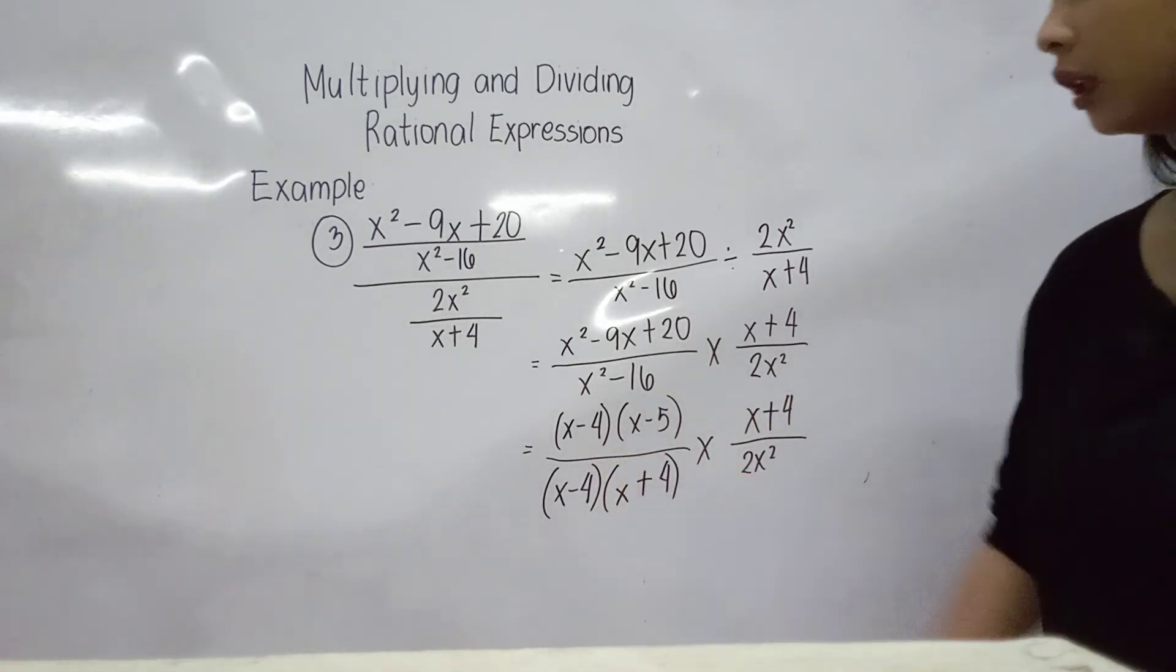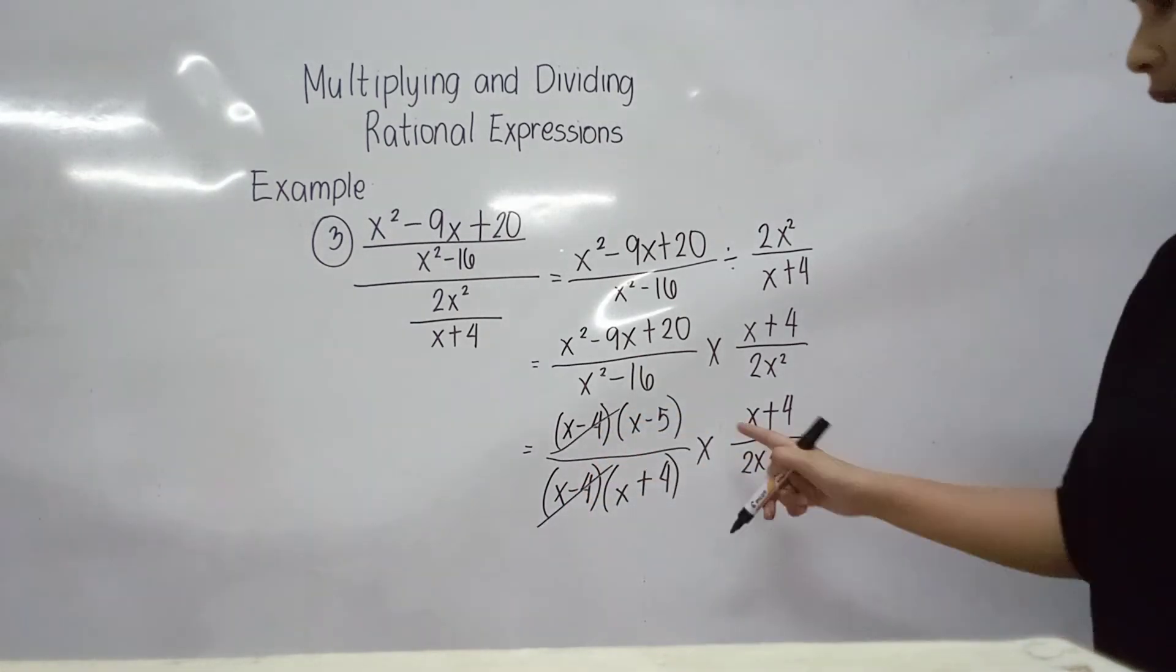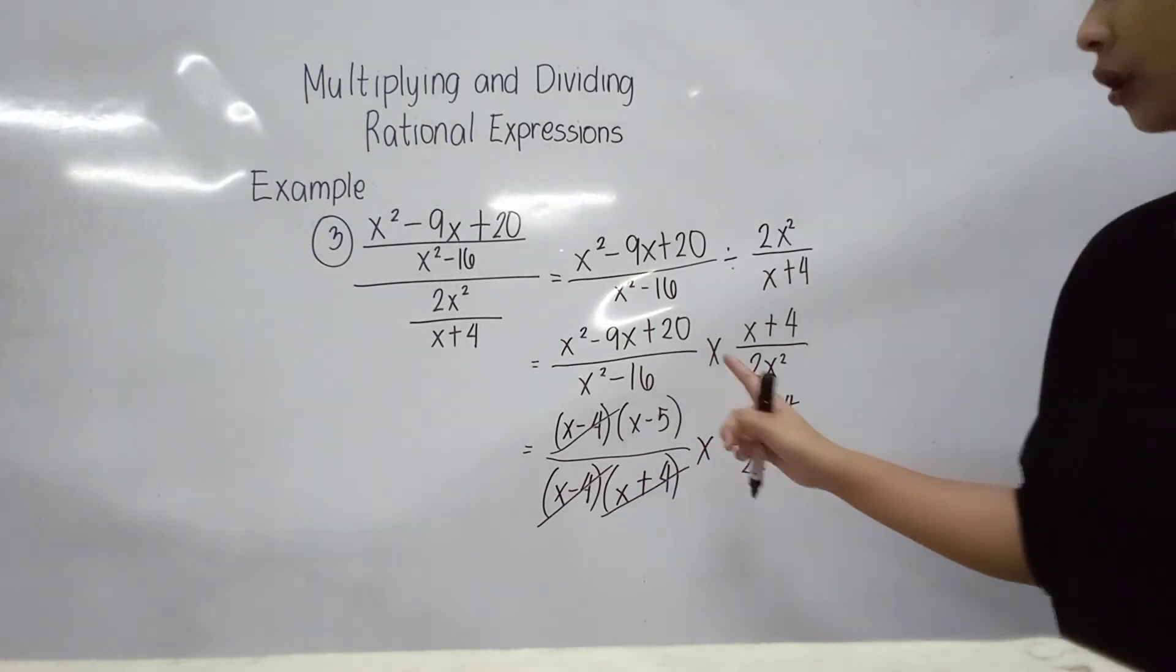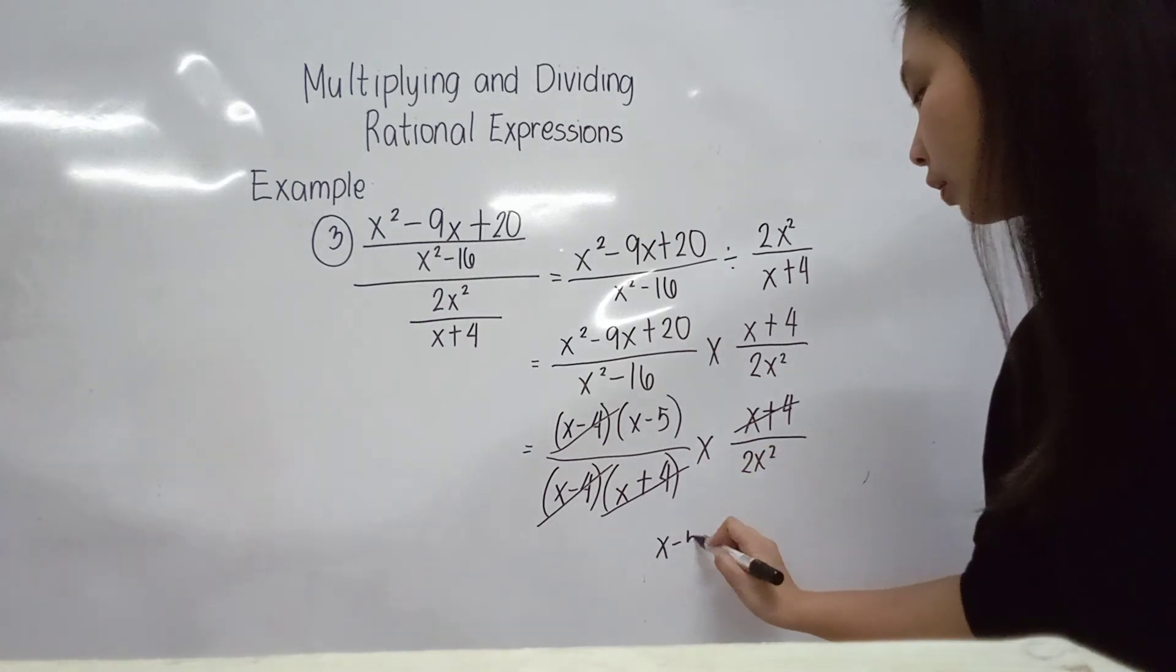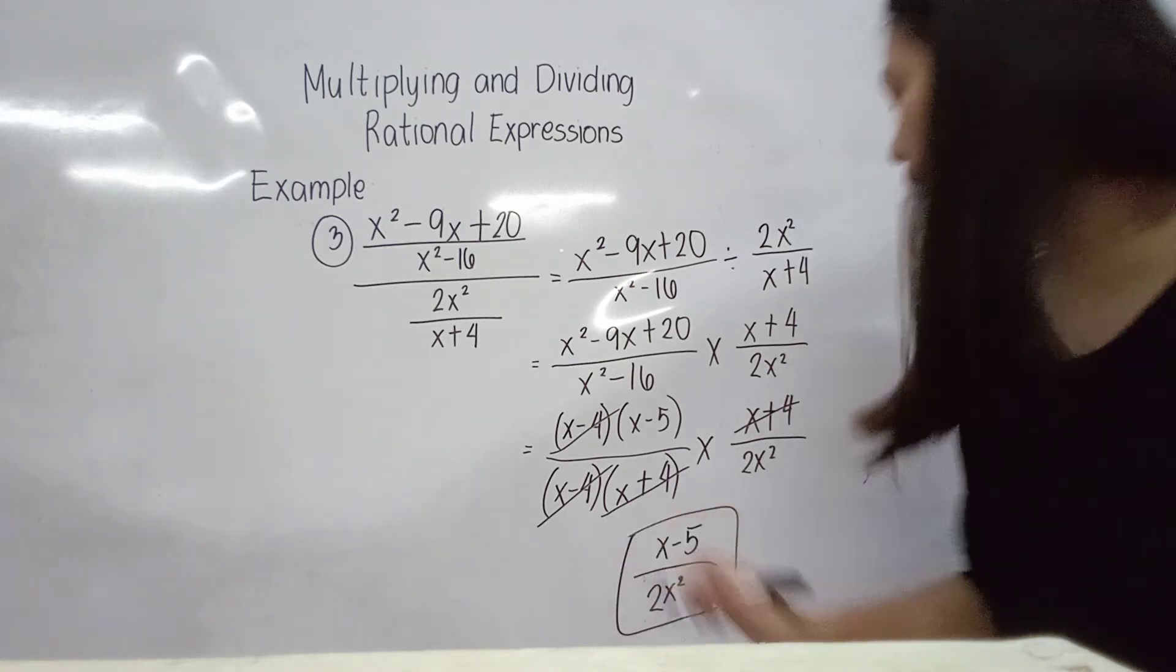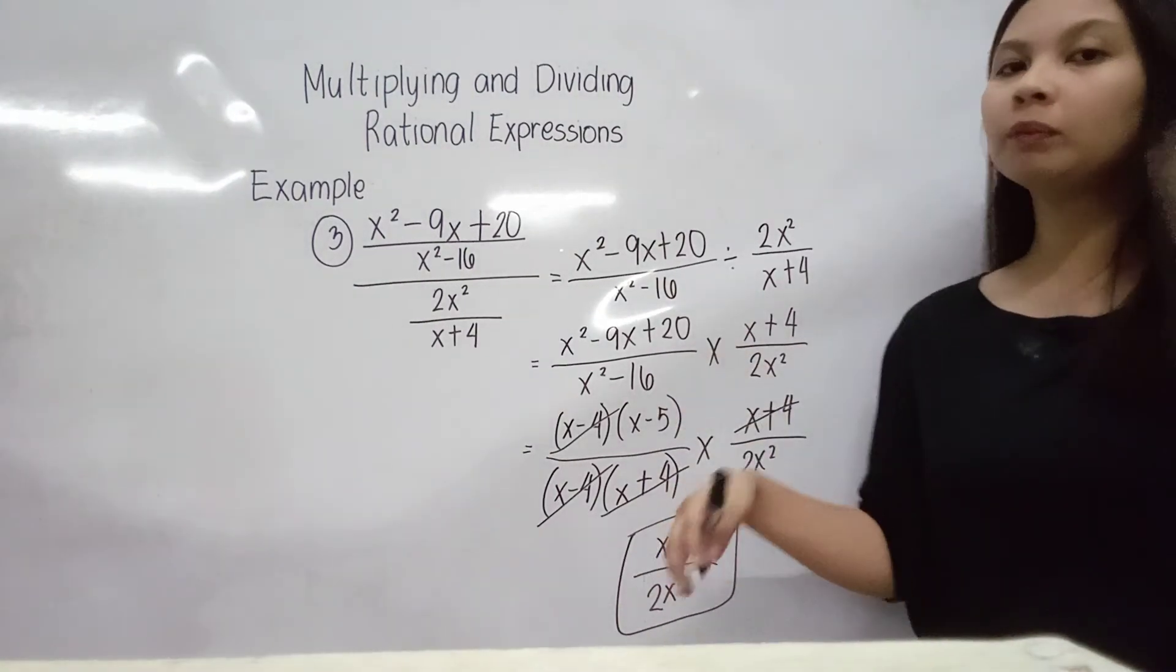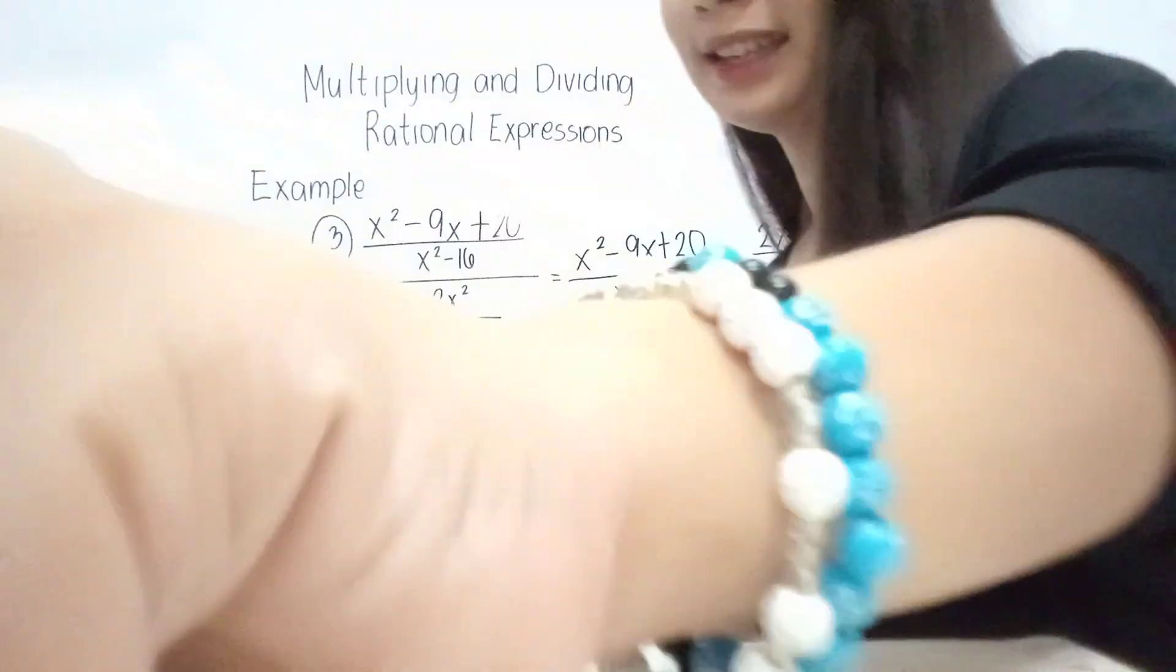Copyin lang itong kabilang side - x plus 4 over 2x squared. Next, x minus 4 and then x minus 4 pwede po natin ma-cancel out. Next, ito naman, x plus 4 and then x plus 4 pwede natin ma-cancel out. So kung ano yung natira, yung final answer natin. So we have x minus 5 over 2x squared. So ayan po yung ating final answer for this last example. So I hope nakatulong po ang posing sa inyo. So yun lang po. Goodbye!